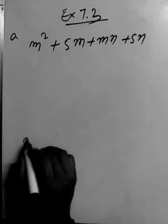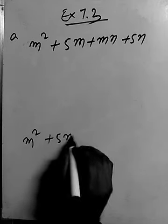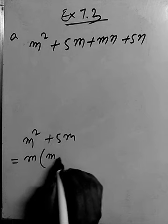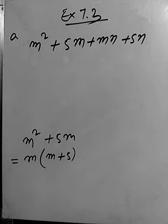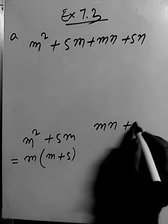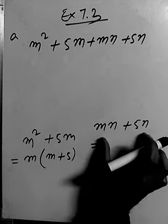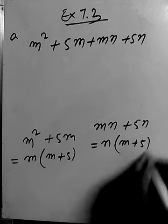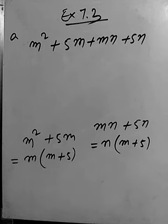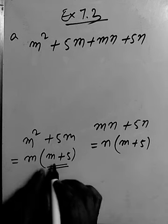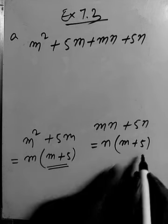From the first group, m squared plus 5m, we take m as the common factor, giving us m times (m plus 5). From the last two terms, mn plus 5n, we take n as the common factor, giving us n times (m plus 5). After making the groups and taking common factors, we observe that (m plus 5) is a common factor in both parts.